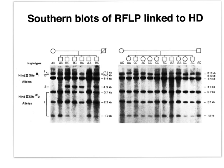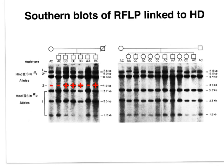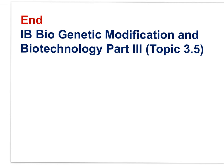Huntington's disease results from a dominant allele. If a parent has the Huntington's allele, the parent passes the allele to children with a 50% probability. A family pedigree was created among individuals in two families in Venezuela by Nancy Wexler. The DNA of the children was cut with a restriction enzyme, HIN-D3, and the fragments were run using gel electrophoresis. The family on the right has no Huntington's; the father for the family on the left has Huntington's. The children whose DNA lanes are marked with a plus have a fragment inherited with the Huntington's allele. And that brings us to the end of IB Bio, Genetic Modification and Biotechnology, Part 3.